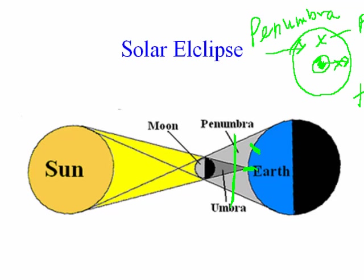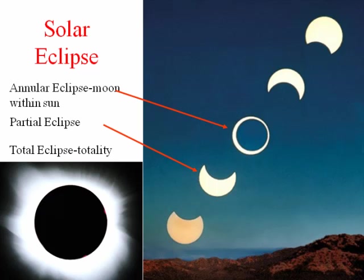There are actually three types of solar eclipses — partial and total, and we'll get to the third one momentarily. Here is the third type of eclipse, and that third type is referred to as an annular eclipse.